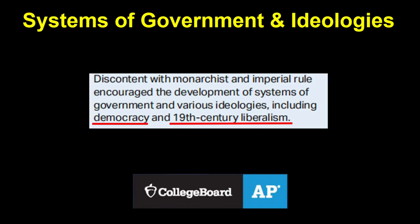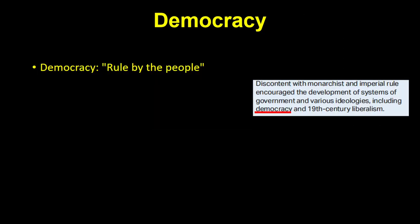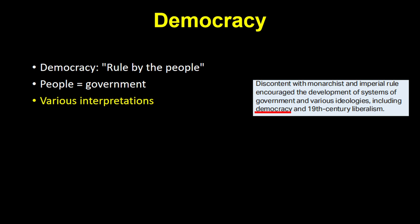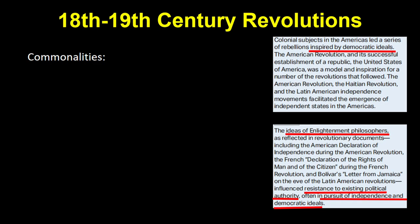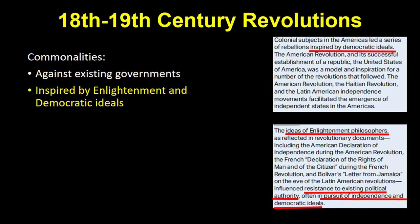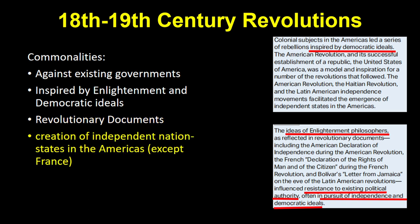As a result of this imagined community — the nation — and the revolutions we're about to look at, states came to be defined not by their rulers or dynasties, but by the people living within their borders. Discontent with monarchist and imperial rule encouraged the development of systems of government including democracy and 19th century liberalism. There are two things all these revolutions have in common: they were against existing governments, and they were inspired by Enlightenment and democratic ideals put into revolutionary documents. And other than the French one, all led to the creation of independent nation-states in the Americas.